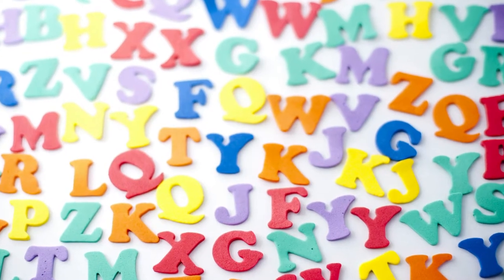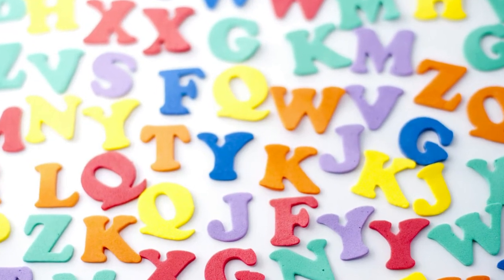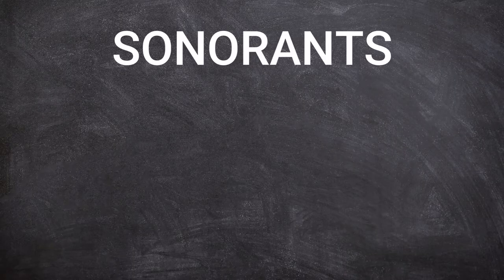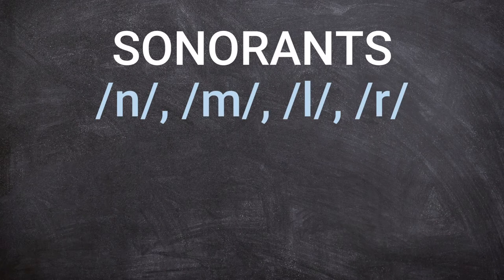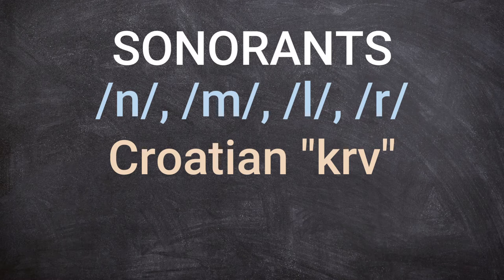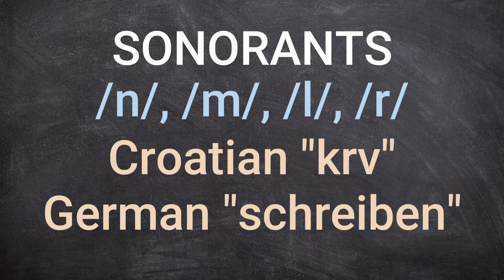There were also consonants that in specific conditions behaved as vowels, usually called sonorants: N, M, L, R. You find something similar in modern languages — for example, 'krv,' meaning 'blood' in Croatian, where R is the heart of the syllable, i.e., the vowel. Or German 'schreiben' (to write), where one syllable is 'schrei' and the other is 'bn,' with N working as a vowel.